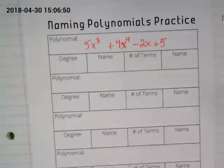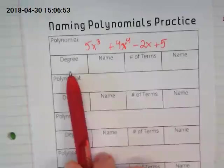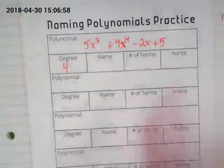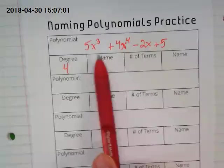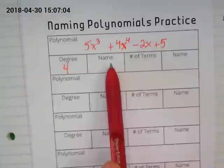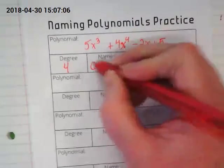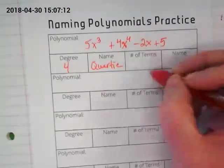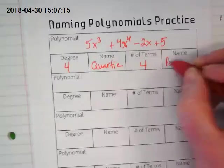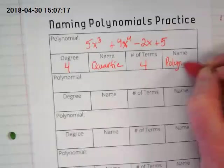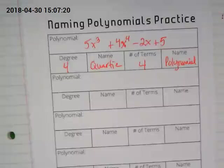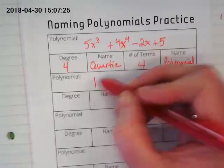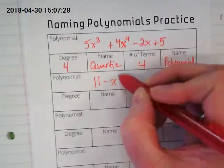So let's just look at this one, thinking about what we did yesterday. What is the degree? Well, the highest degree is four. And since it's four, we want to go back to our chart, and that means it's quartic. There's four terms, which means it's a polynomial. So that's all you're going to do to do this practice today. Let me fill in these other terms. I guess I could have done this before I made the copies, but I did not.